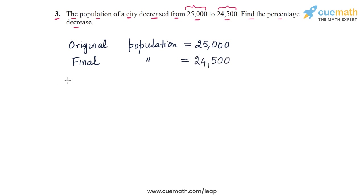This means that the decrease in the population will be 25,000 minus 24,500. This will be the decrease and this is equal to 500. The absolute value of the decrease is 500.